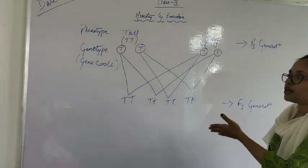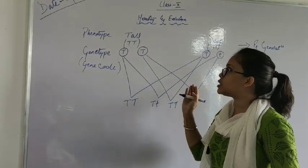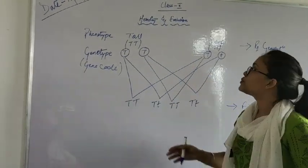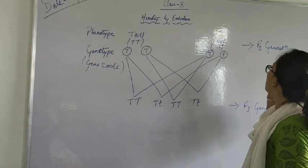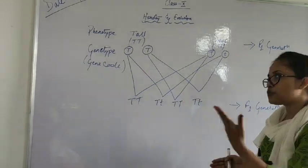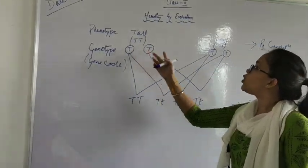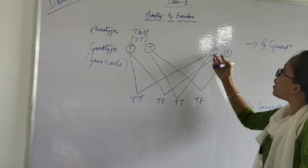So here we have monohybrid cross. We have taken one characteristic only—that is tall or dwarf. So here, this is your P1 generation. P1 generation means parent generation. So here tall, and here dwarf.